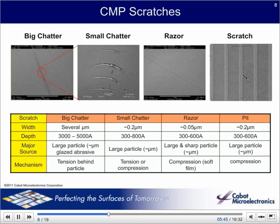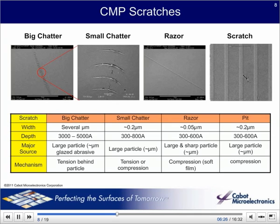Another one of the major CMP failure modes is scratching on the surface. This slide shows some of the major types of scratches generated during polishing: the big chatter mark, small chatter mark, razor, and pitting. All scratches are different in terms of width and depth, and the source and mechanism of scratch generation are also different as shown in the table. Typically, large tramp particles, impurities, agglomerated or dried clusters of particles, and even polishing debris such as pad fragment decorated with particles all contribute to scratching. Of course, what is polishing at the microscopic scale? It's probably a series of controlled, very tiny scratches. Our goal is to minimize the number of deep scratches and to quickly polish them away before new ones form.